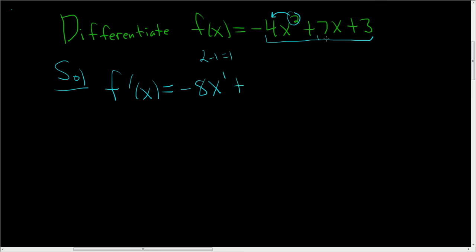Plus the derivative of 7x is just 7, plus the derivative of 3 is just 0. So we end up with the derivative of x equal to negative 8x plus 7. And that's it.